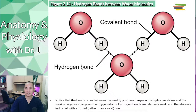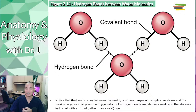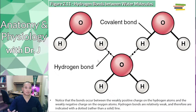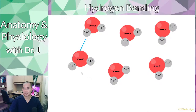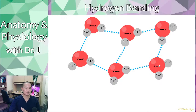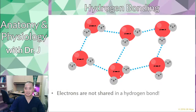Now hydrogen bonds: whoever named this threw a curveball at people learning chemistry for the first time. Hydrogen bond actually refers to — remember how with ionic bonds, positive attracts negative? Same with hydrogen bonds, except it's a partial positive and partial negative charge attracting each other. What we have here is that the partial positive is attracted to the partial negative, and vice versa — but they're not actually sharing electrons. This is one of the big differences between hydrogen bonding and polar covalent bonding.